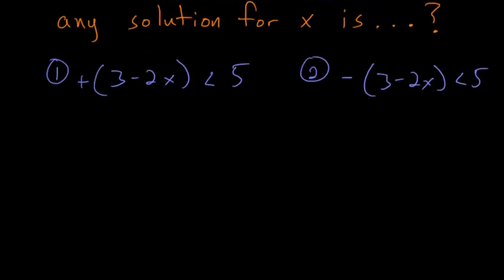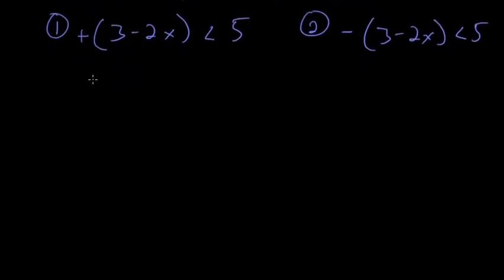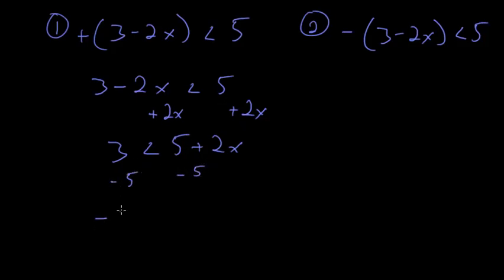To solve this equation on the left we just rewrite it without the parentheses first. Then we can add 2x to each side so we'll have 3 is less than 5 plus 2x, then subtract 5 from each side so we'll have negative 2 is less than 2x, and then divide each side by 2. So we'll have that negative 1 is less than x, so this is one half of our solution.